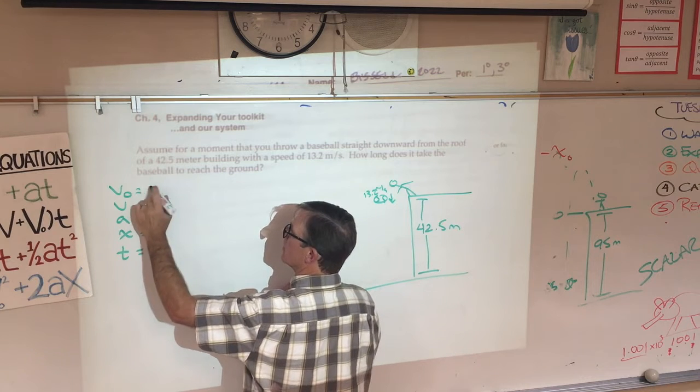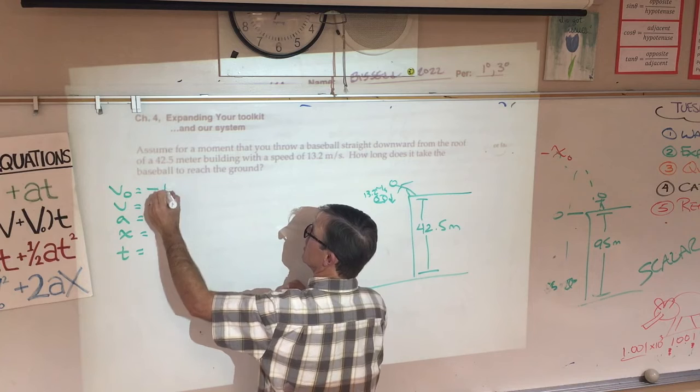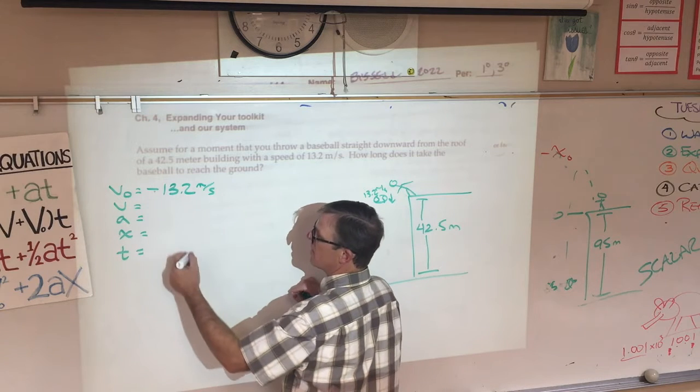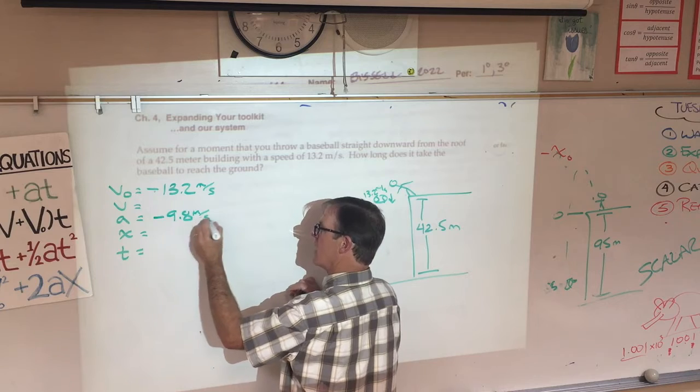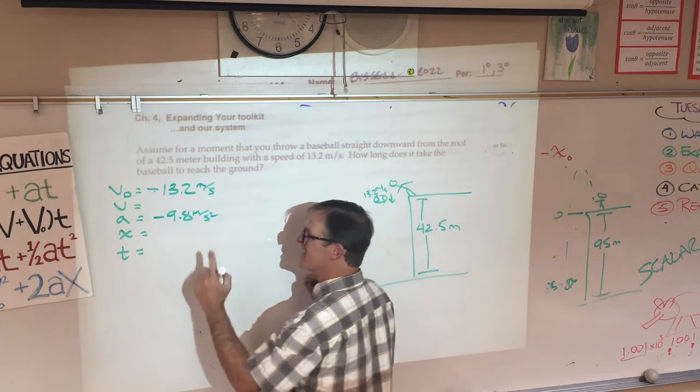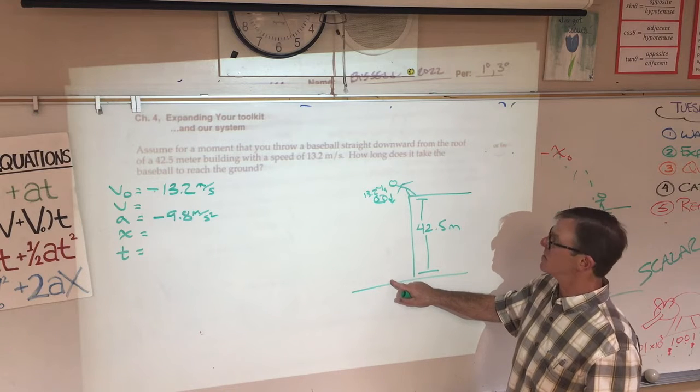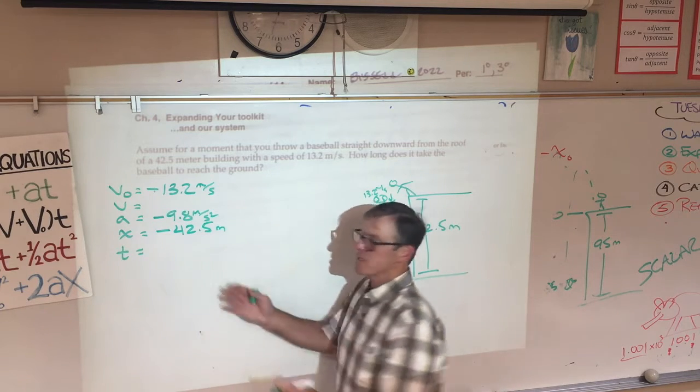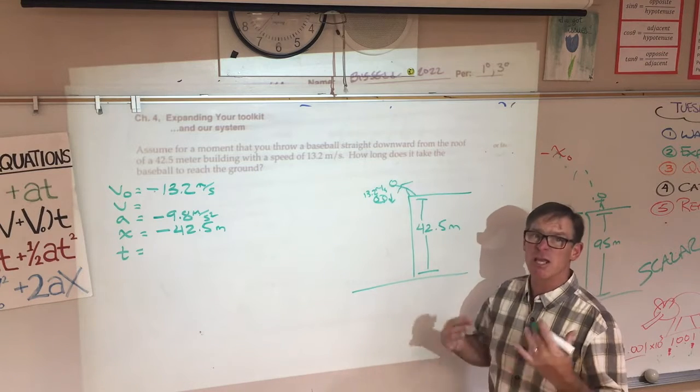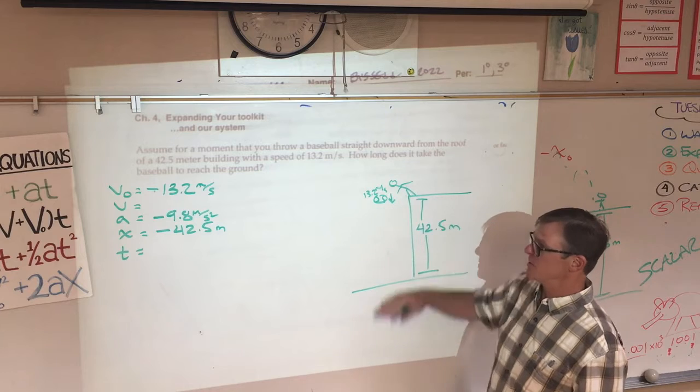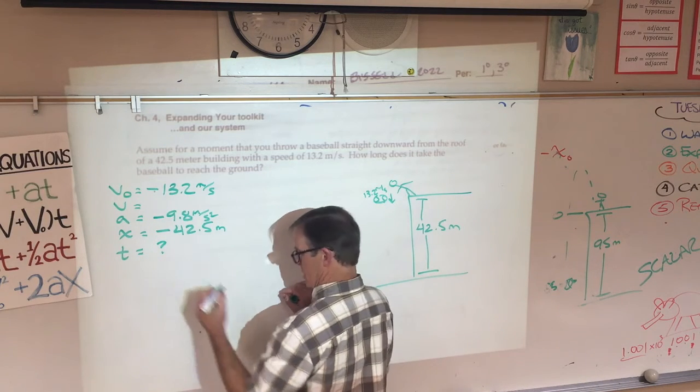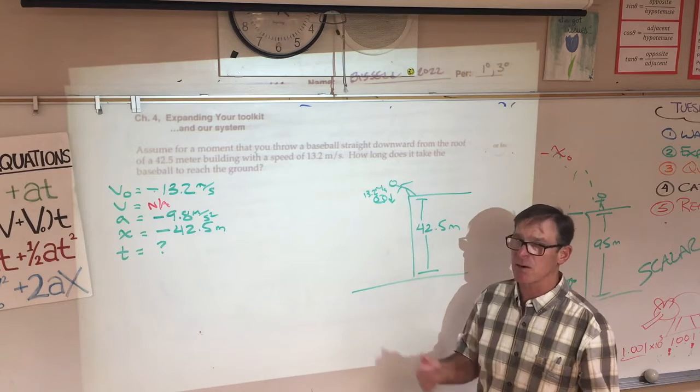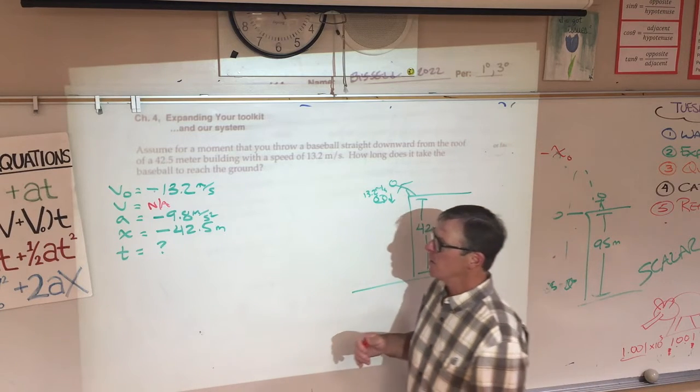Since you threw it downward, your velocity is initially downward and therefore initial velocity is negative 13.2 meters per second. We don't know much about the final velocity. I'm going to skip that. Acceleration is that of gravity always, right? Negative 9.8. And in this case, unlike the prior problem, it asks for the time it takes to get to the ground. So its displacement is going to be all the way to the ground. And again, many of you are tempted to make that 42.5, but of course the displacement, the change in position is negative because it's gone down from its original position. Time is what we're looking for. Clearly, we don't have the final velocity. It does strike the ground with some non-zero velocity. It's moving when it hits the ground, but we don't know what that is. We're going to treat that as not available.